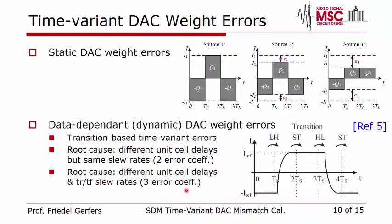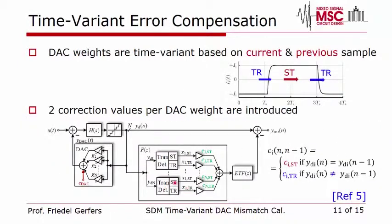These coefficients are data-dependent, meaning they depend on the previous and current sample. As shown here for the two-coefficient case with a fixed delay but different slew rates: a zero-to-one transition introduces an additional charge error, while no transition leaves only the absolute static error. Our model is therefore enhanced so that each current cell has two coefficients — one constant for no transition and one transition-based that looks at previous and current data to select the appropriate coefficient.